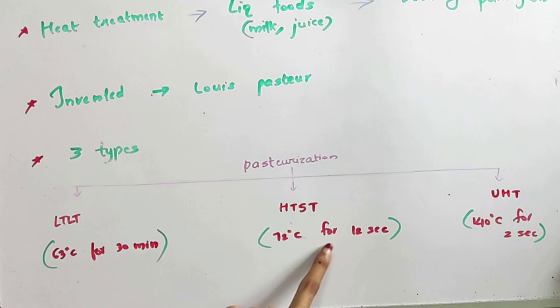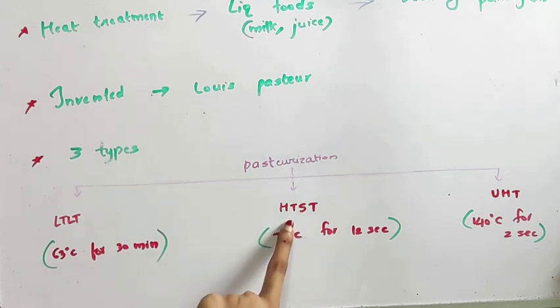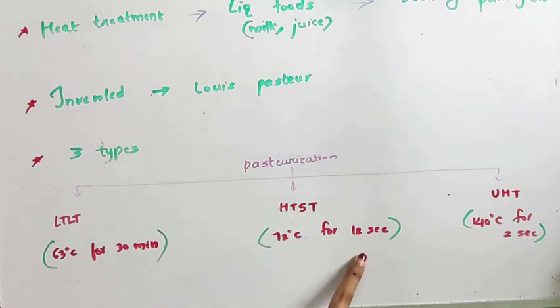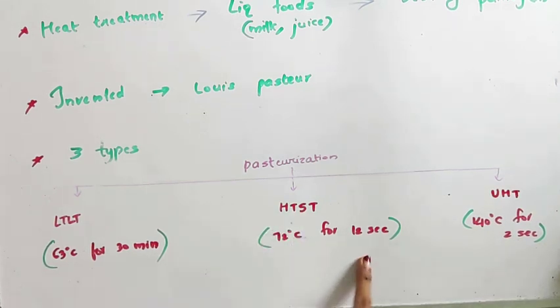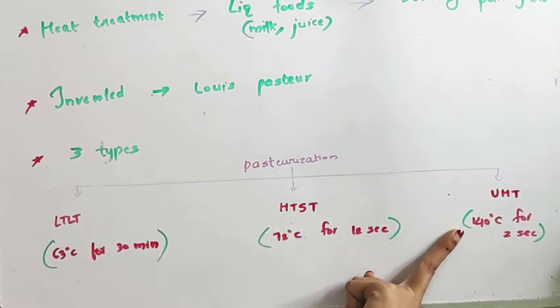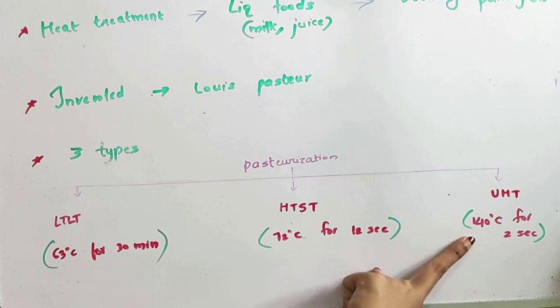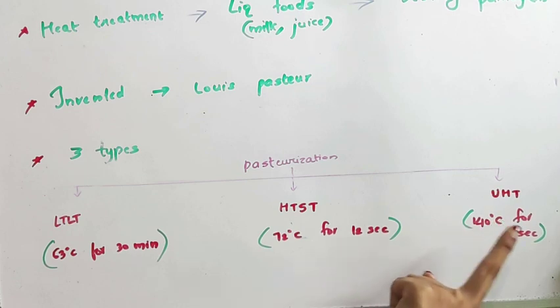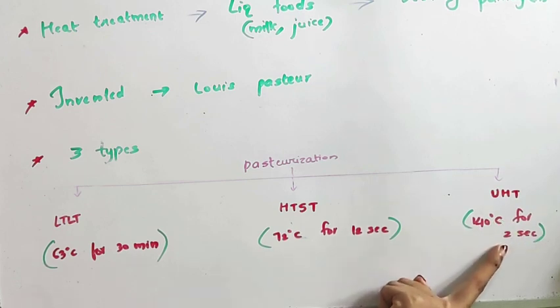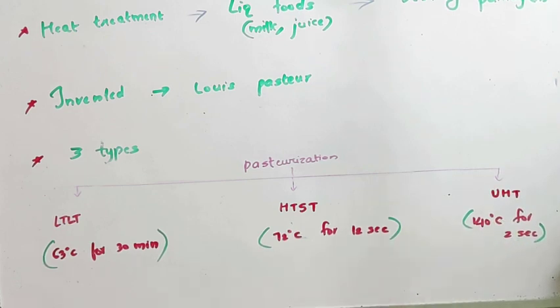In HTST, 72 degrees Celsius is applied for a short period of time, that is 15 seconds. In UHT, an ultra high temperature of 140 degrees Celsius is applied for a small period of time, that is two seconds.